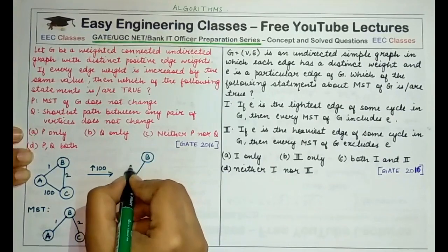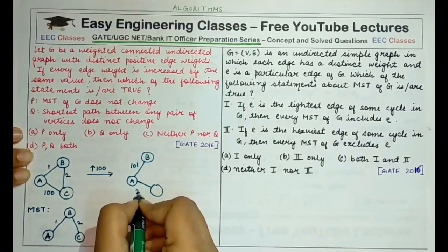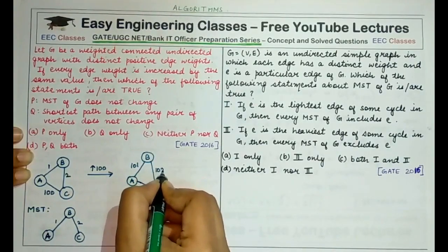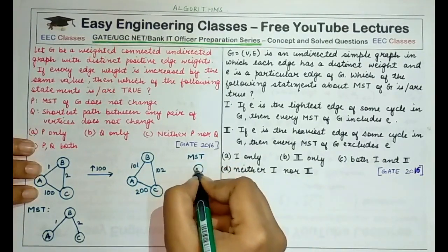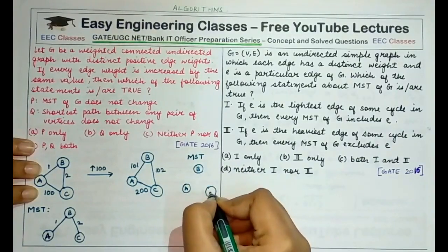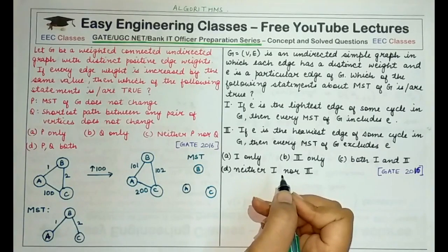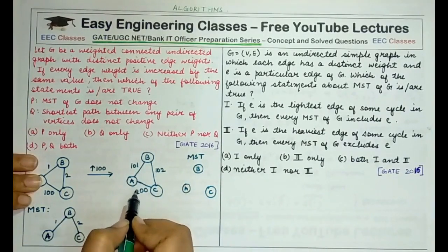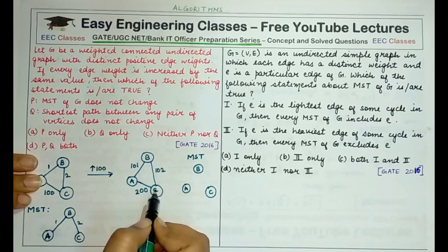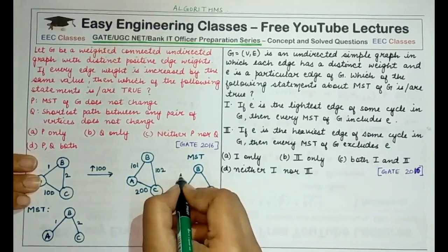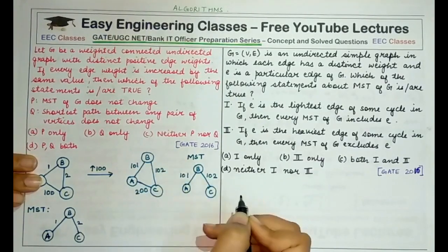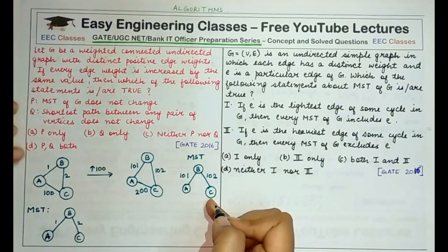After increasing each edge by 100, AB becomes 101, AC becomes 200, and BC becomes 102. For the new graph, the MST still includes AB and BC: the sum AB + BC = 203, which is less than AC + BC = 302 or AB + AC = 301. So the MST structure does not change. Statement P is true.